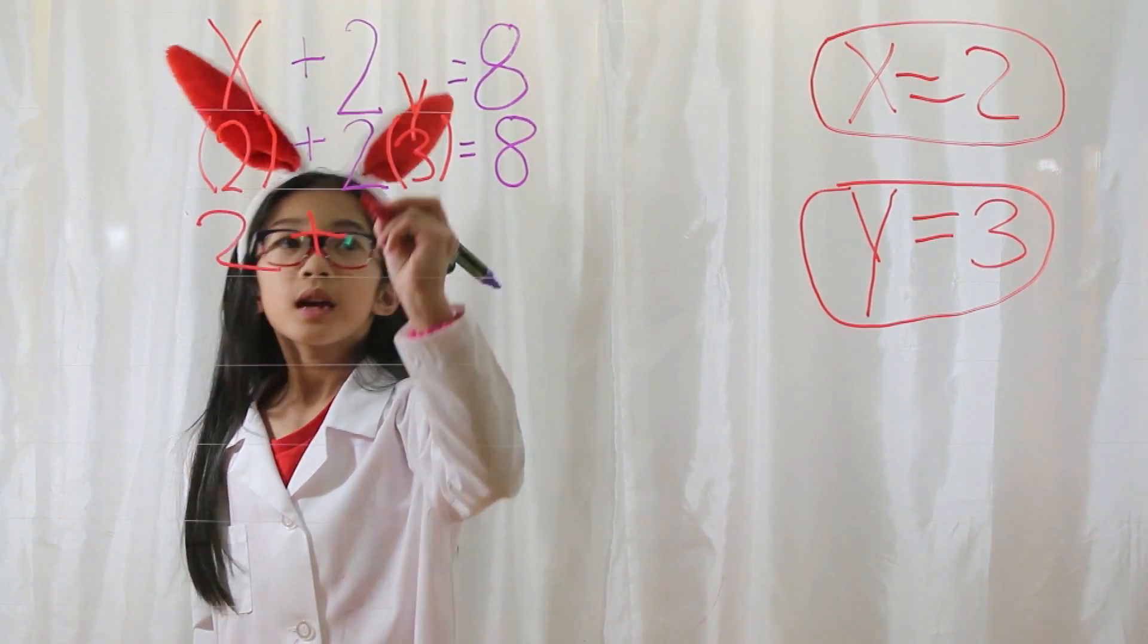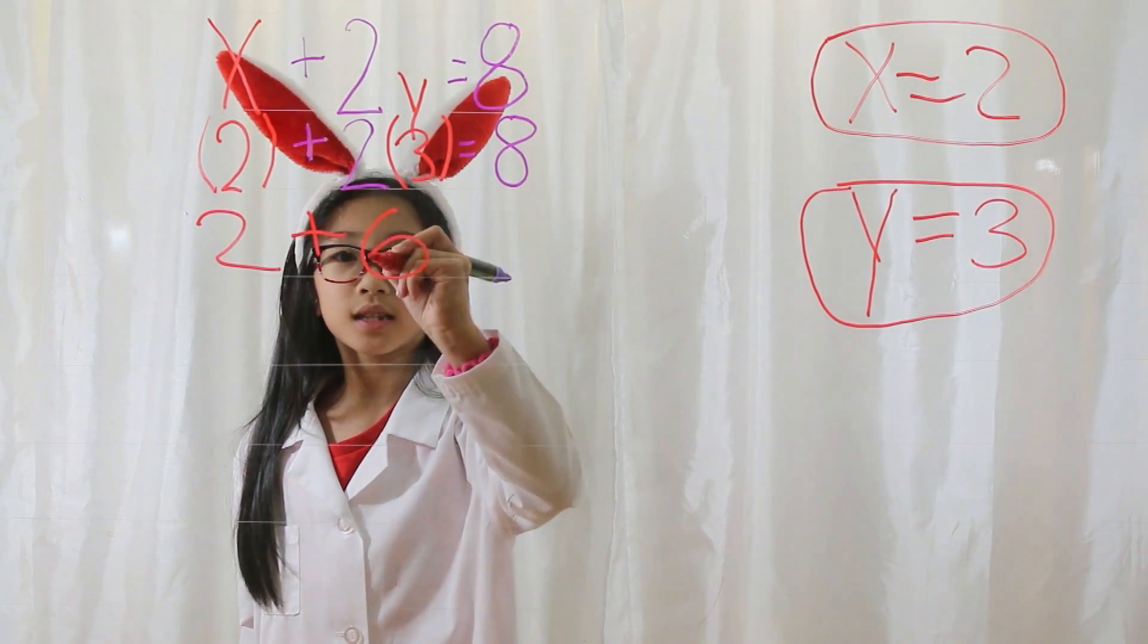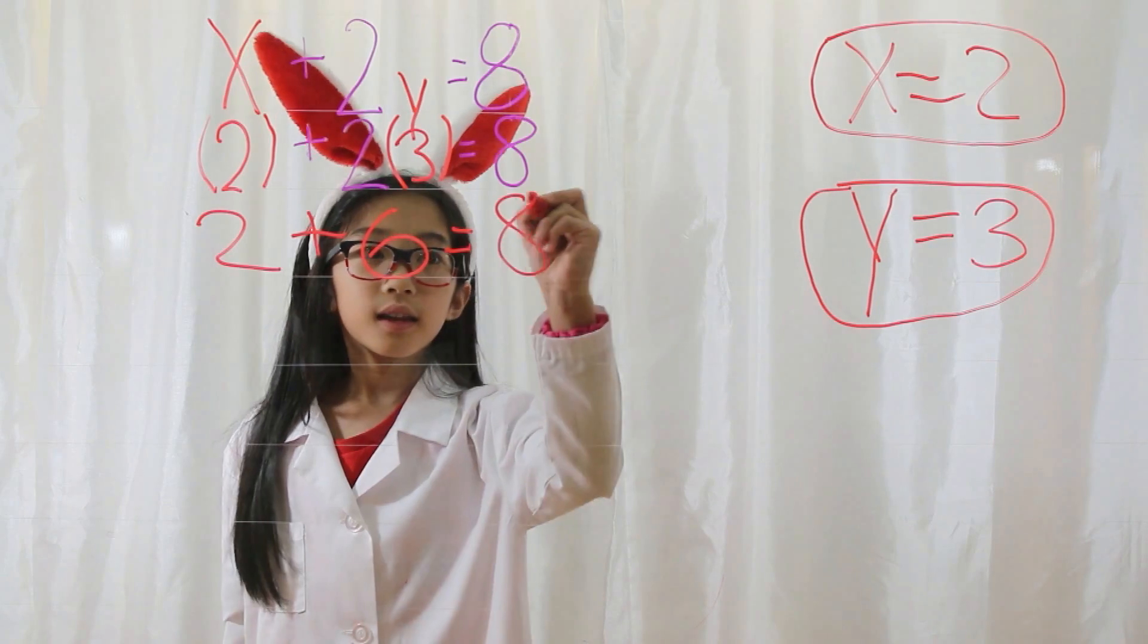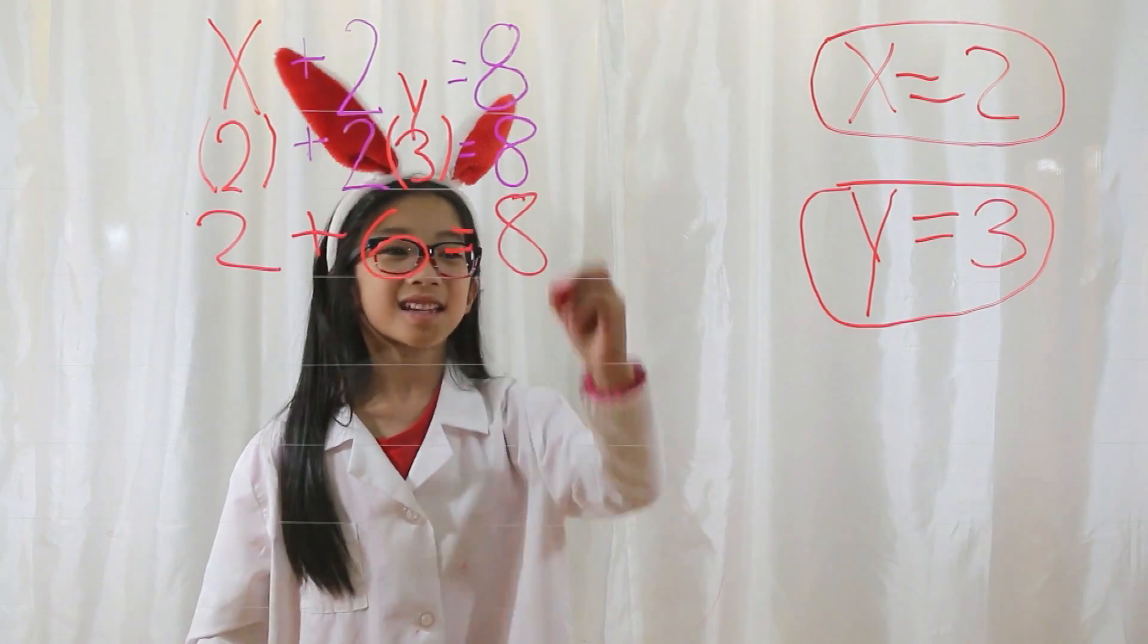Now multiply it out. 2 plus 2 times 3, which is 6, equals 8. Is that correct? Yes! Check!